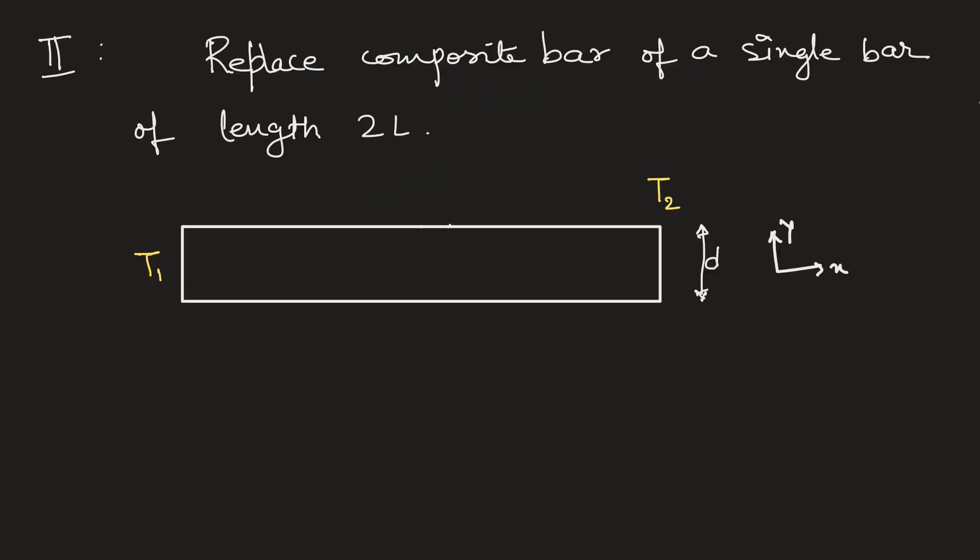Now we have to replace the composite bar by a bar of length 2L and area A and conductivity K_equivalent. The thermal conductivity of this bar is K_equivalent and the length is 2L. So the heat transfer rate in this bar can be written as Q dot conduction equals K_equivalent into area into T1 minus T2, that is delta T, divided by 2L.